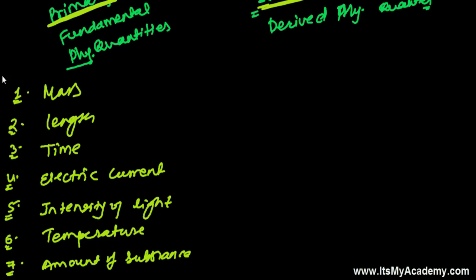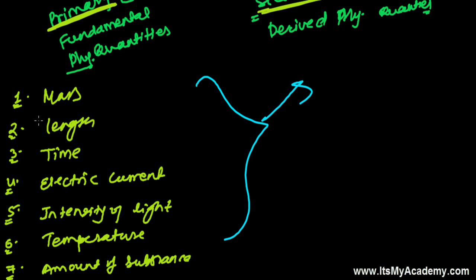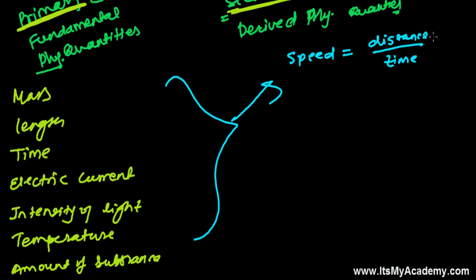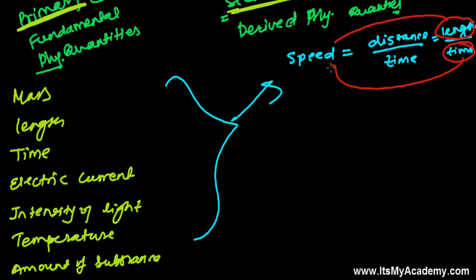Derived quantities are those made from these seven fundamental quantities — maybe one, two, three, or all of them. For example, speed is a derived physical quantity because speed means distance traveled in a certain interval of time. Distance is length and time is time, so speed is derived from the two fundamental quantities: length and time.